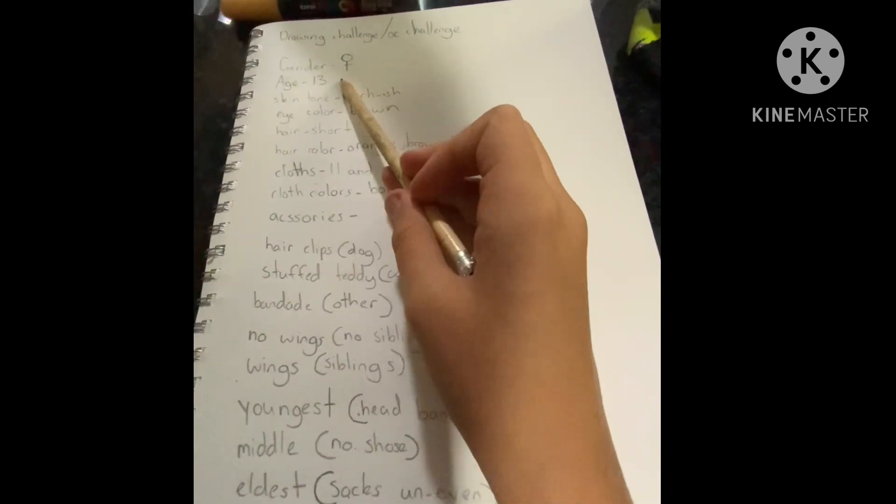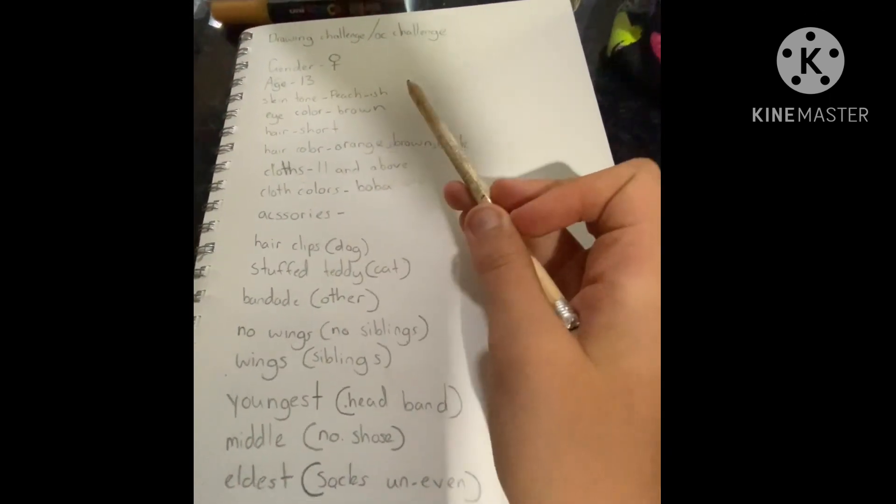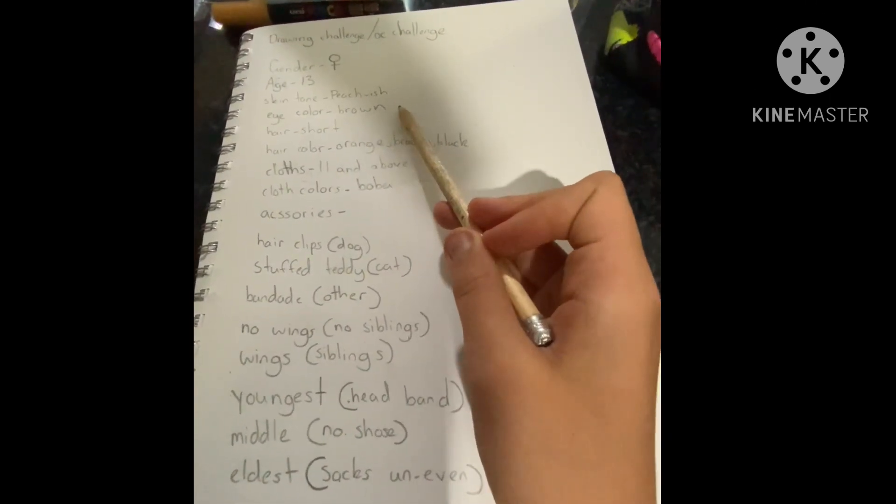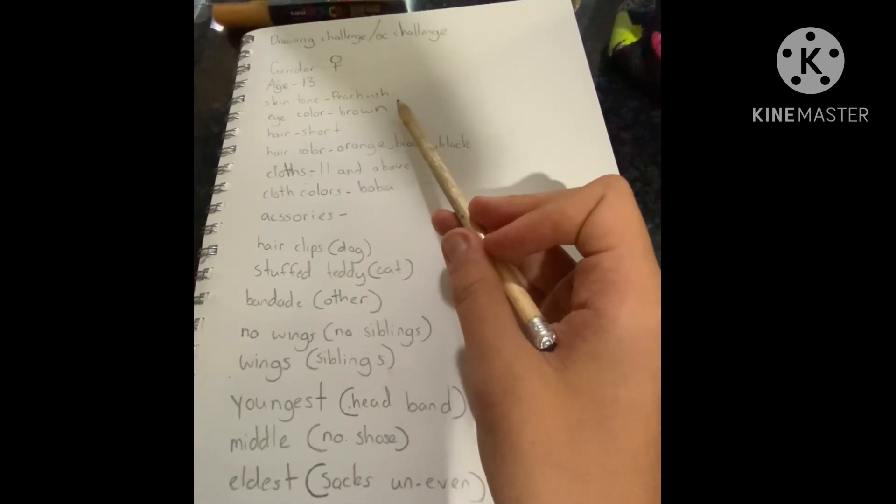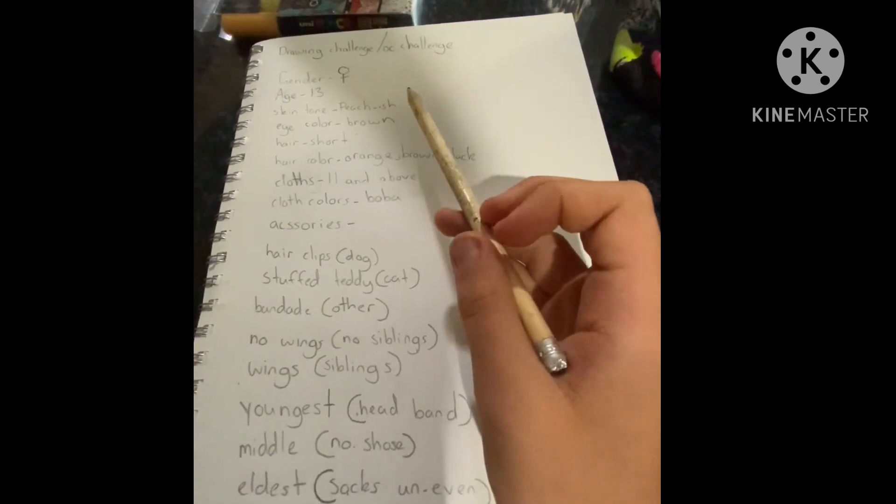You get to choose the gender and the age. The color of the eyes will be the color of your drawing book.